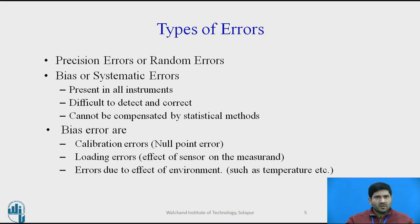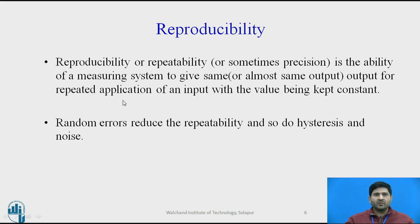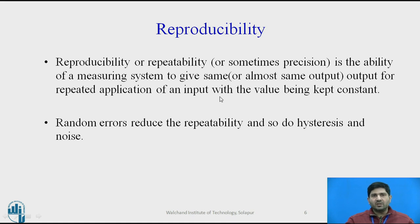Another important characteristic is often called reproducibility — some textbooks term it repeatability, and others use the term precision; they are often used interchangeably. It is defined as the ability of the measuring system to give the same, or almost the same, output for repeated application of an input with the value kept constant. Random errors reduce repeatability, and so do hysteresis and noise. If there is poor repeatability, you might want to check for hysteresis effects and associated noise, which to a certain extent can be compensated by using proper signal conditioning.